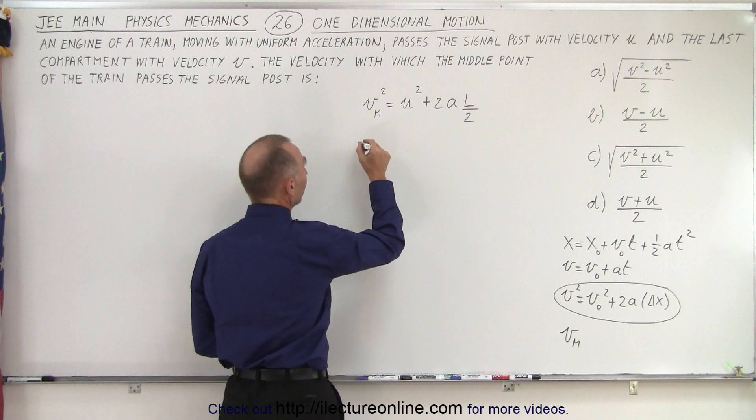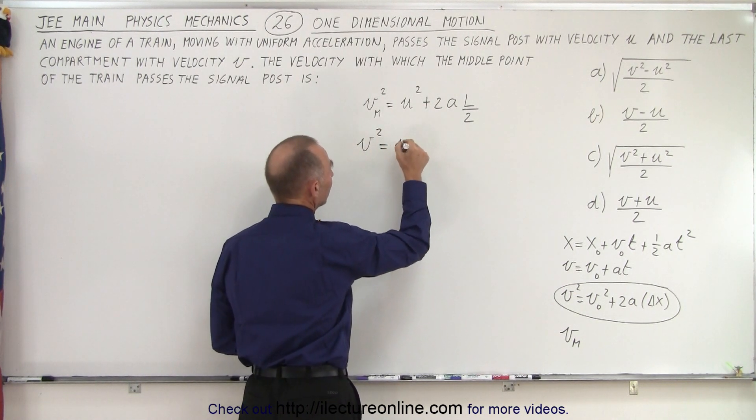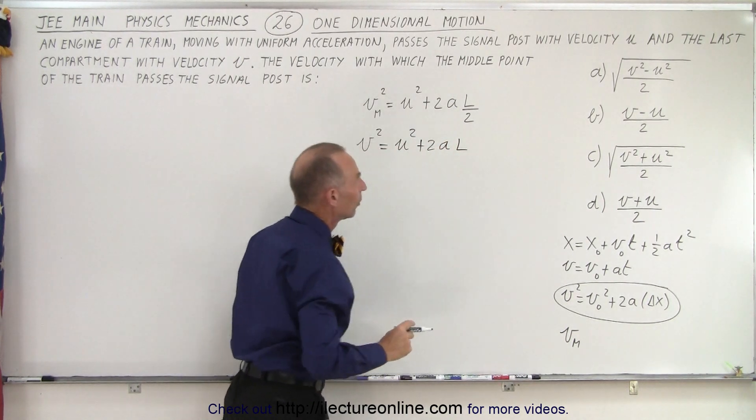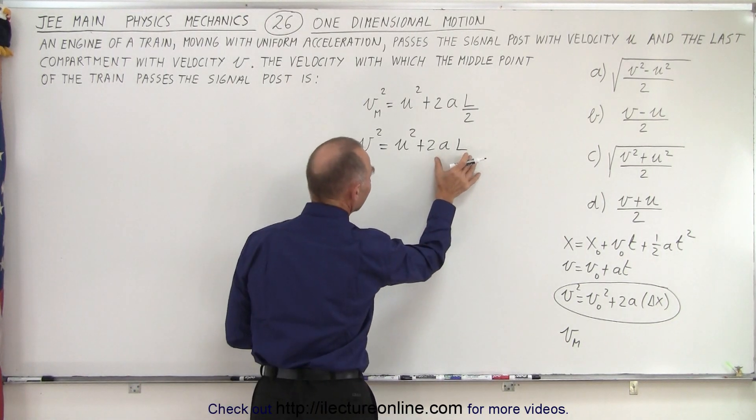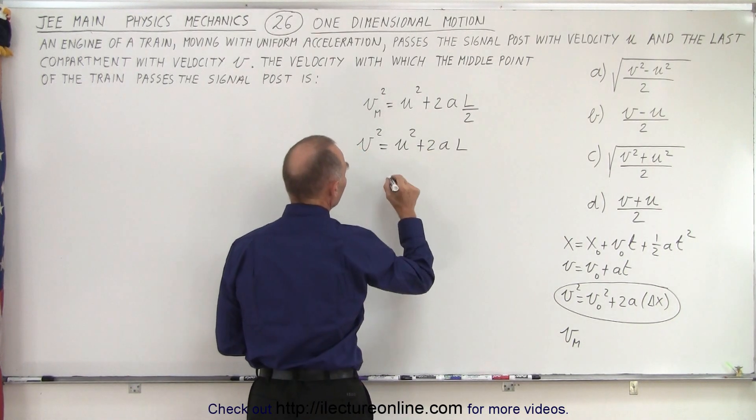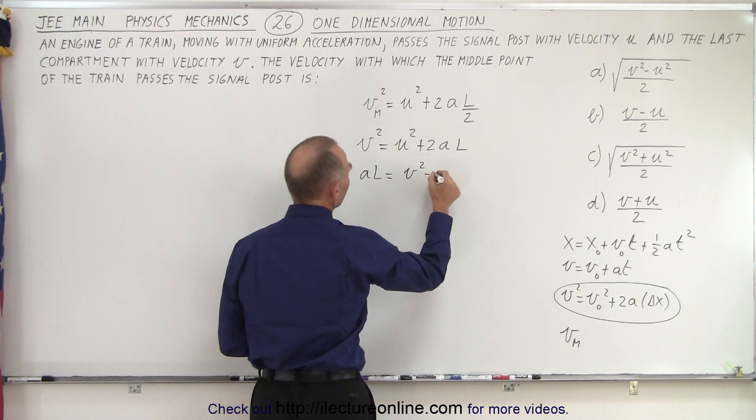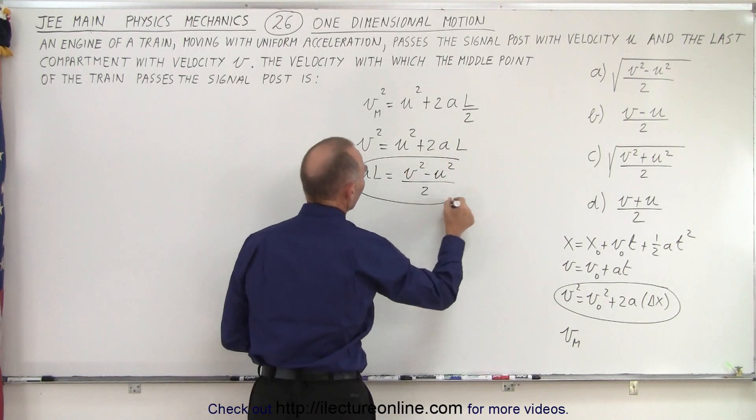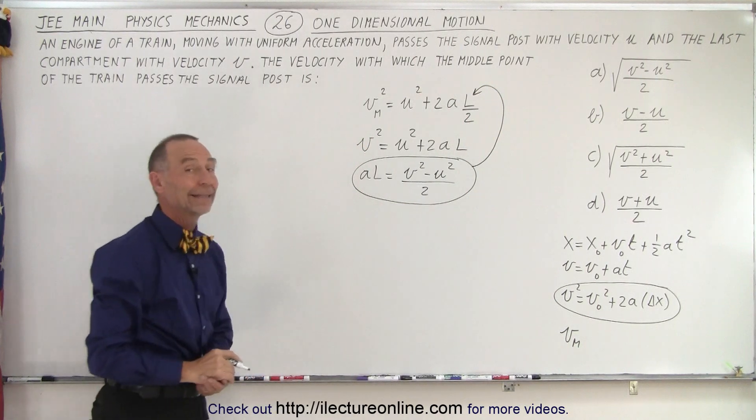So what we could also do is as follows. The velocity at the end of the train squared equals the velocity in the beginning of the train squared plus two a times l. So what we can see here is that a times l, if we solve for a times l, because the two's cancel out, we can see that a times l is equal to v squared minus u squared divided by two. So this can replace a times l in that equation.